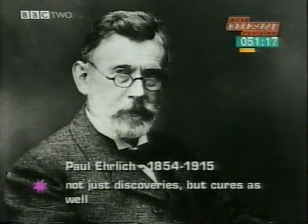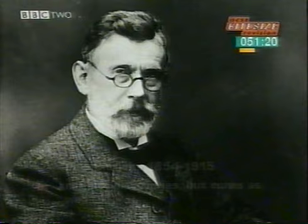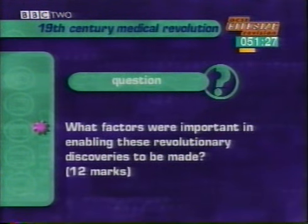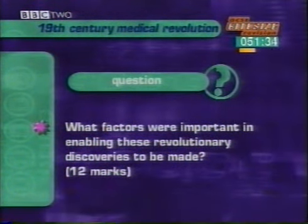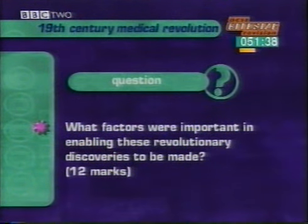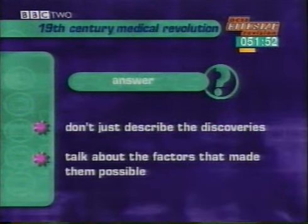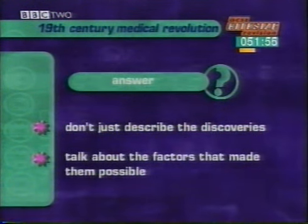These scientists were not only making discoveries, but providing cures too. This is one kind of question you'll be faced with in the exams — worth 12 marks: 'What factors were important in enabling these revolutionary medical discoveries to be made?' In order to answer, you need to not just describe the discoveries themselves, but also the different factors that made them possible. Obviously individuals were important — Pasteur, Koch, Behring and Ehrlich were brilliant original thinkers who built on each other's work. The scientific method of conducting experiments, recording and then publishing work, meant that other people could check results and take them further. The fact that scientists published their work and that communications were vastly improved was important in spreading new scientific ideas.